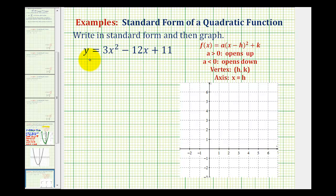In this example, we're given a quadratic function in general form. We want to write the equation in standard form. The benefit of standard form, or the form we see here, is that we can easily identify the vertex and the equation of the axis. The vertex has coordinates h, k, where h is here and k is here. And the equation of the axis of symmetry is x equals h.